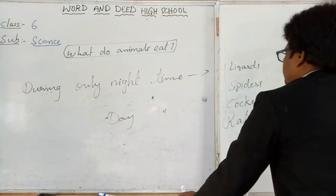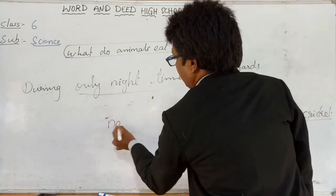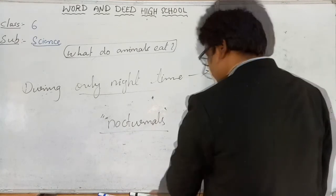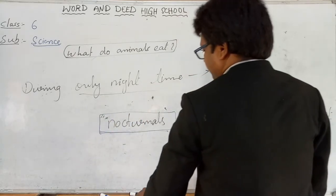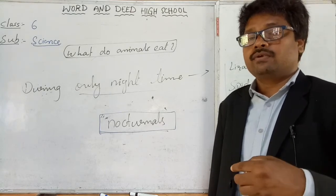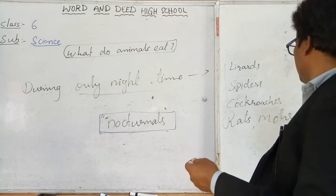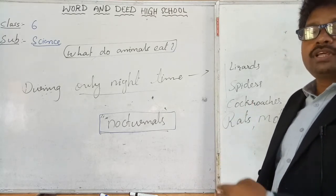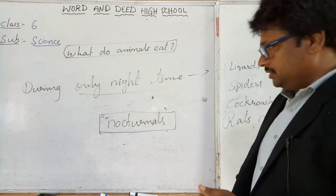The animals which come out only during night time for the sake of their food are called nocturnals. Nocturnals are living things which come out only during nights to collect or get their food. Examples include lizards, spiders, cockroaches, rats, moths, crickets, etc. If you know more such living things, you can write their names.